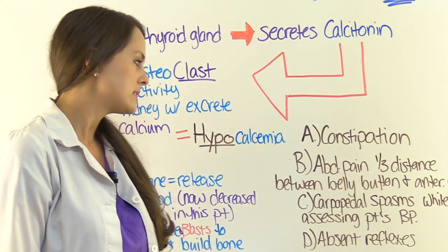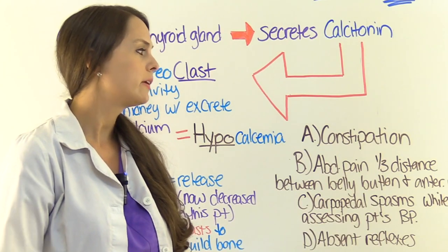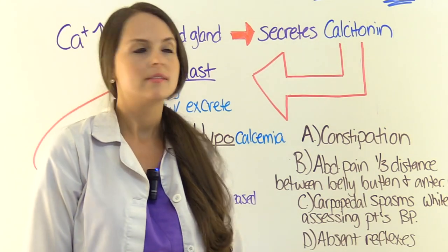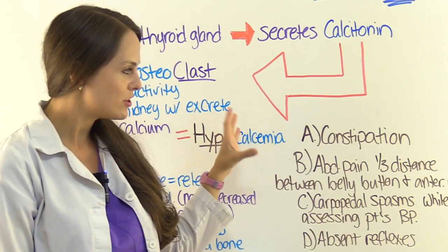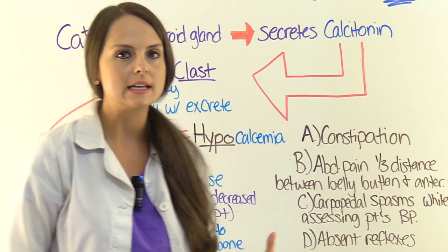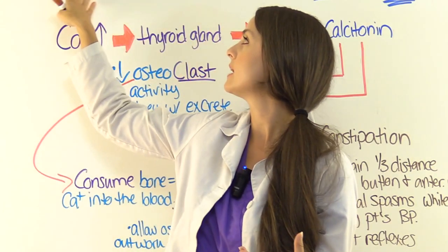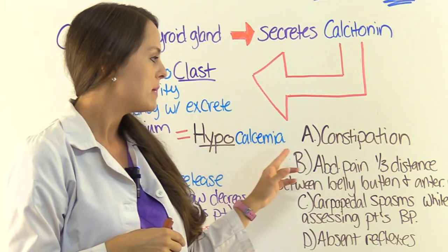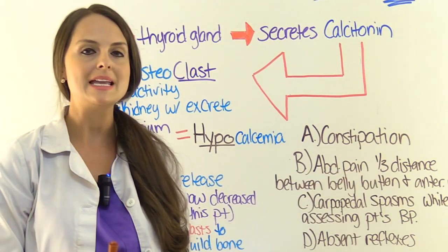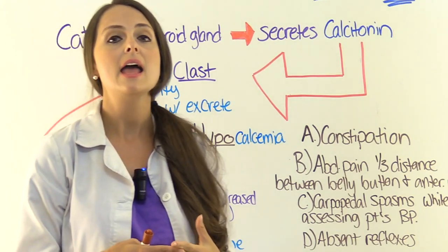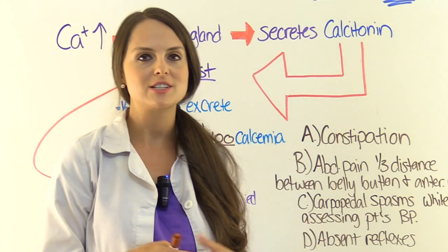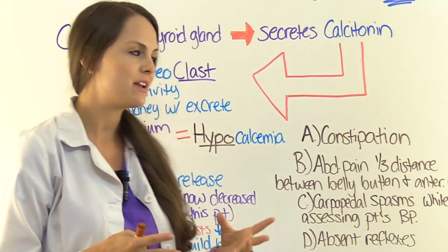Answer B — abdominal pain at one-third distance between the belly button and anterior iliac spine. They like to throw out things like this because it looks alarming. But is it really going to be seen in a patient taking calcitonin? No. This is McBurney's point, and it is a sign seen in appendicitis — which would be a red flag for appendicitis, but not for calcitonin.